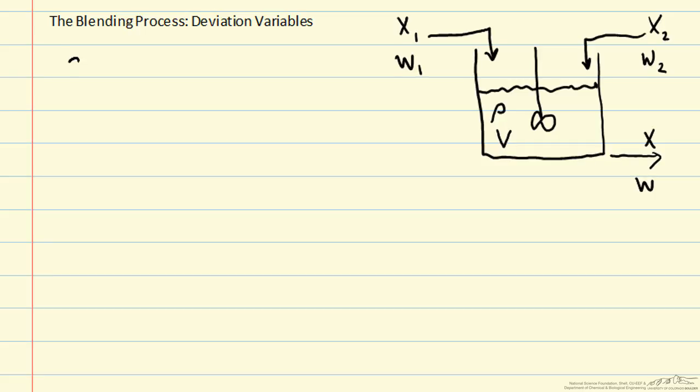Here we're going to consider the blending process with change in volume as a function of time, described as 1 over the density times the flow rate in through stream 1, the flow rate in through stream 2, and the flow rate leaving.